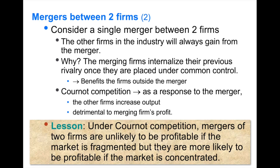Under Cournot competition, mergers of two firms are unlikely to be profitable if the market is fragmented, but more likely to be profitable if the market is concentrated. A merger to monopoly in a two-firm industry is always profitable, but in a fragmented industry with many outside firms, a two-firm merger is very unlikely to be profitable.